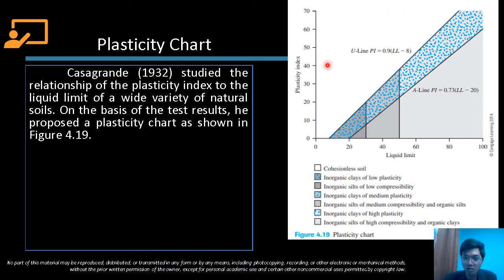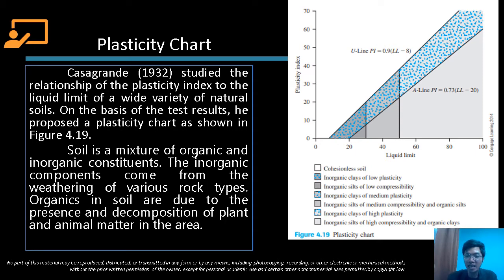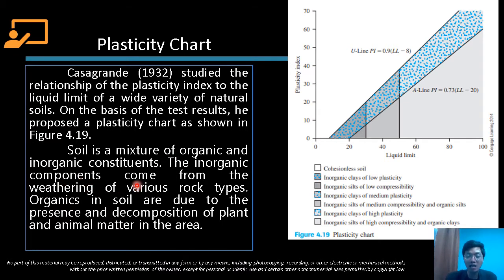The white region is for cohesionless soils. The inorganic and organic clay and silt mentioned here — soil is actually a mixture of organic and inorganic constituents. Inorganic components of soil come from the weathering of various rock types. Organic soil is organic due to the presence and decomposition of plant and animal matter in the area.